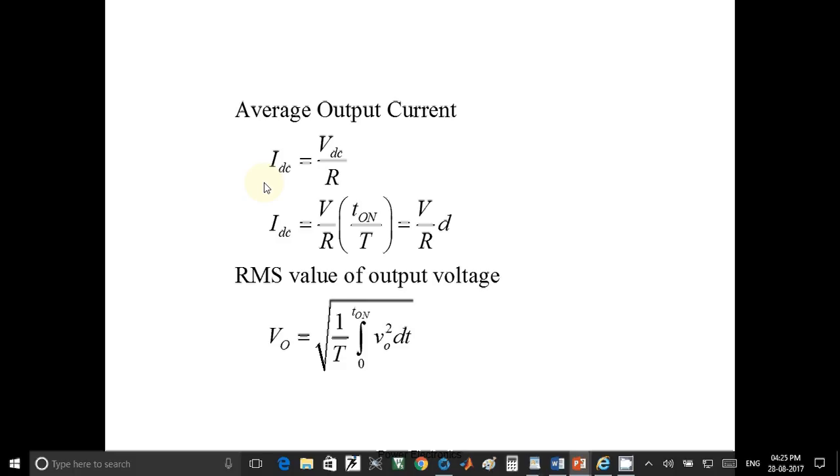Average output current is given by Vdc upon R. Vdc is V into T on upon T, so average current equals V upon R into D, where D is duty cycle.